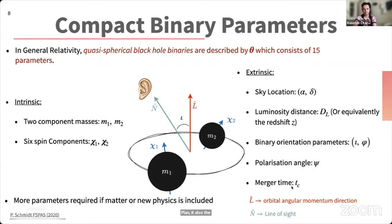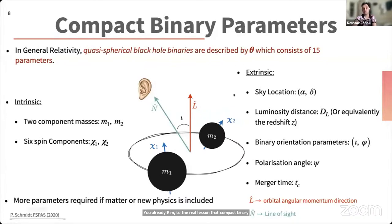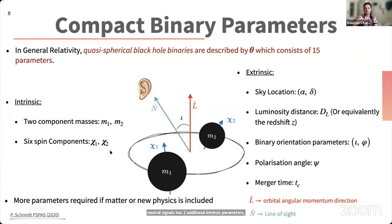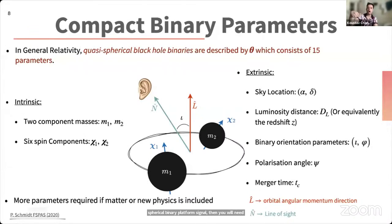The extrinsic parameters also include the polarization angle ψ and the merger time t_c. Compact binary signals are pretty well modeled. If you want to include more physics, you need more parameters — for example, binary neutron star signals have two additional intrinsic parameters called tidal deformation parameters, which measure how deformable the neutron stars are. Similarly, if you relax the quasi-circular assumption for binary black holes, you need two more parameters to characterize the eccentricity of the orbit.